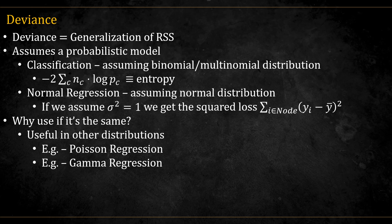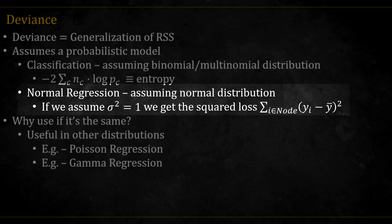For classification, we can use the binomial or multinomial distribution and get this. This looks a lot like the entropy and it is actually equivalent to it for the splitting. It is also called log loss in the sklearn package. For regression, we can assume the normal distribution with a variance of 1 and get the squared loss, which is what we've seen before.